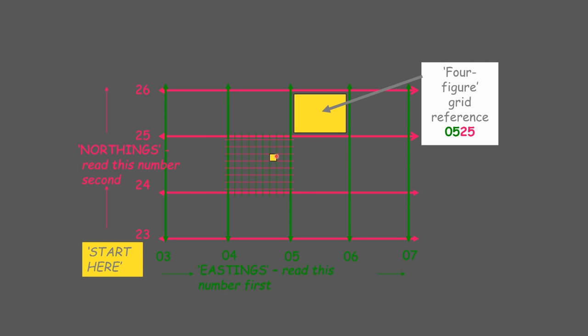Now if we want to find this more precise yellow square or a feature that's found in this area what we have to do is we have to ensure that we read it in exactly the same way. Firstly we start by finding the area. In this case it is 04 24. Then after the 04 we have to work out which section inside this grid it is. So it would be 04 1 2 3 4 5 6 7. There we go. 047.